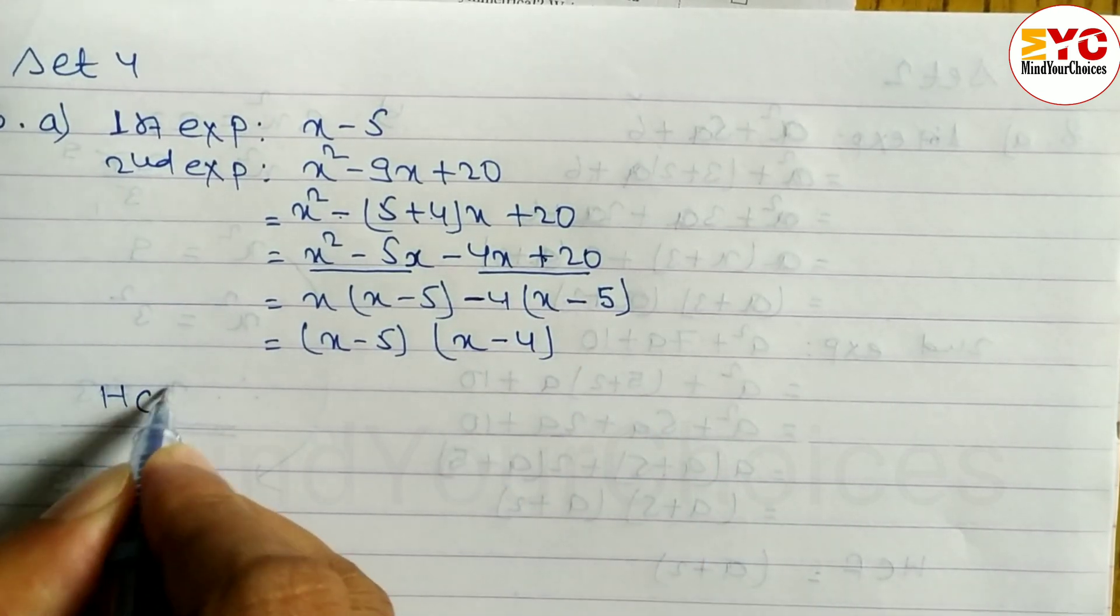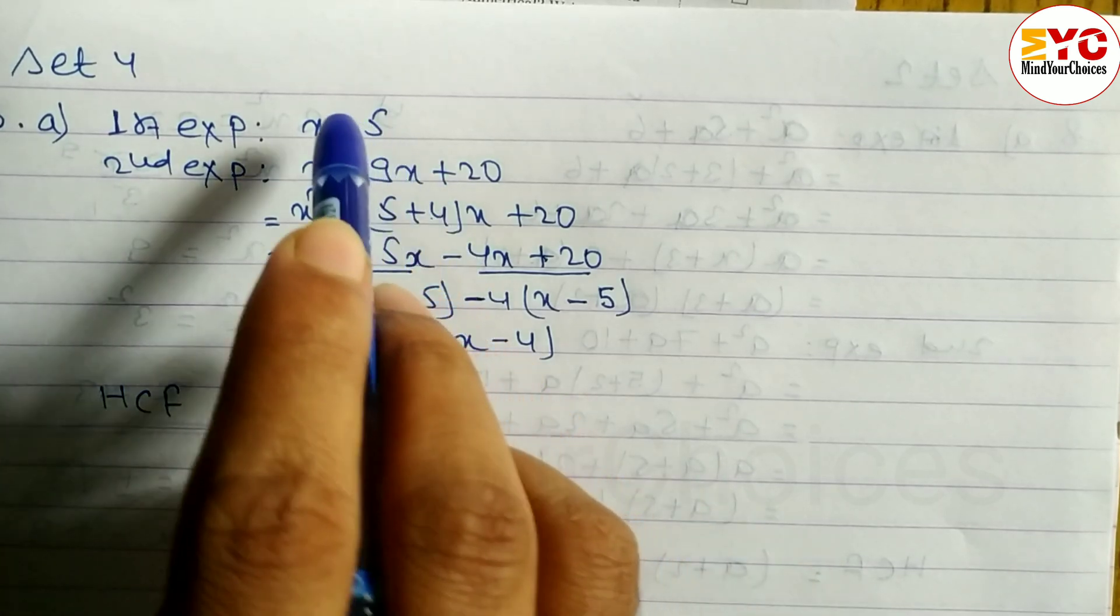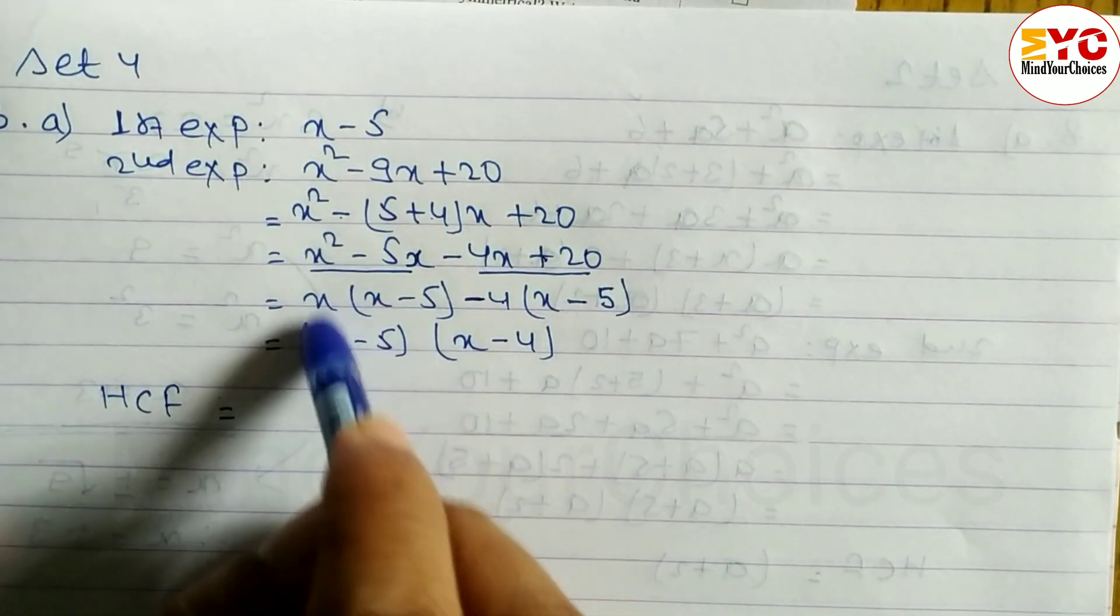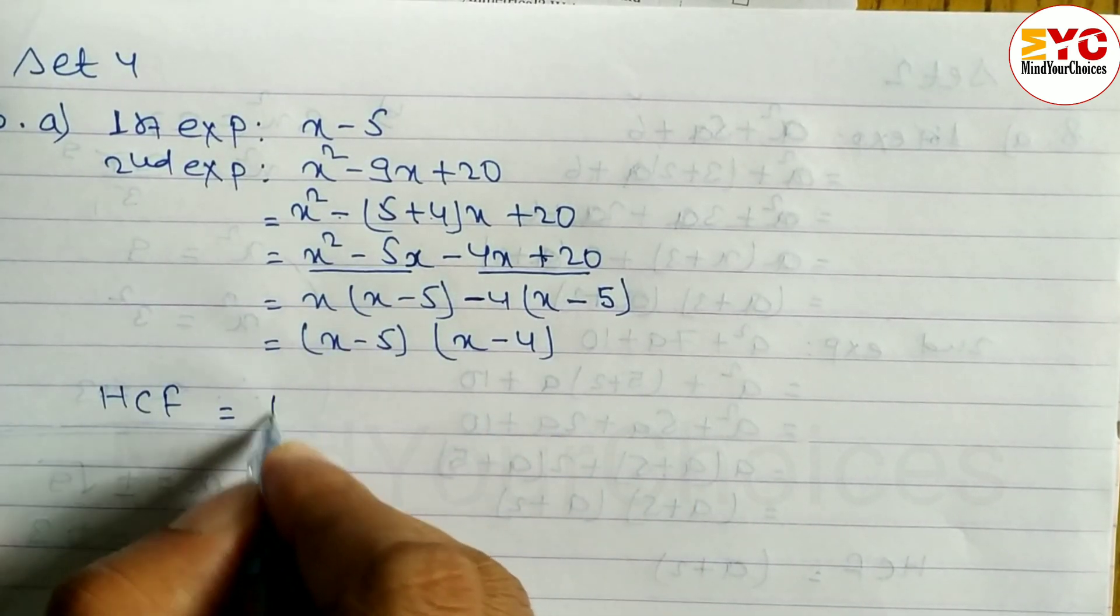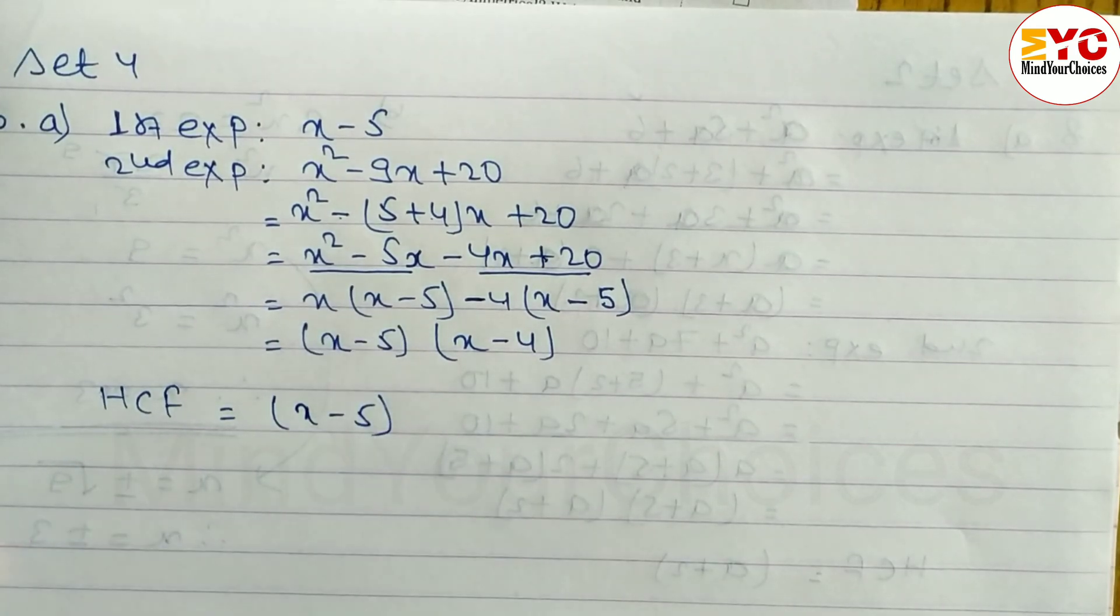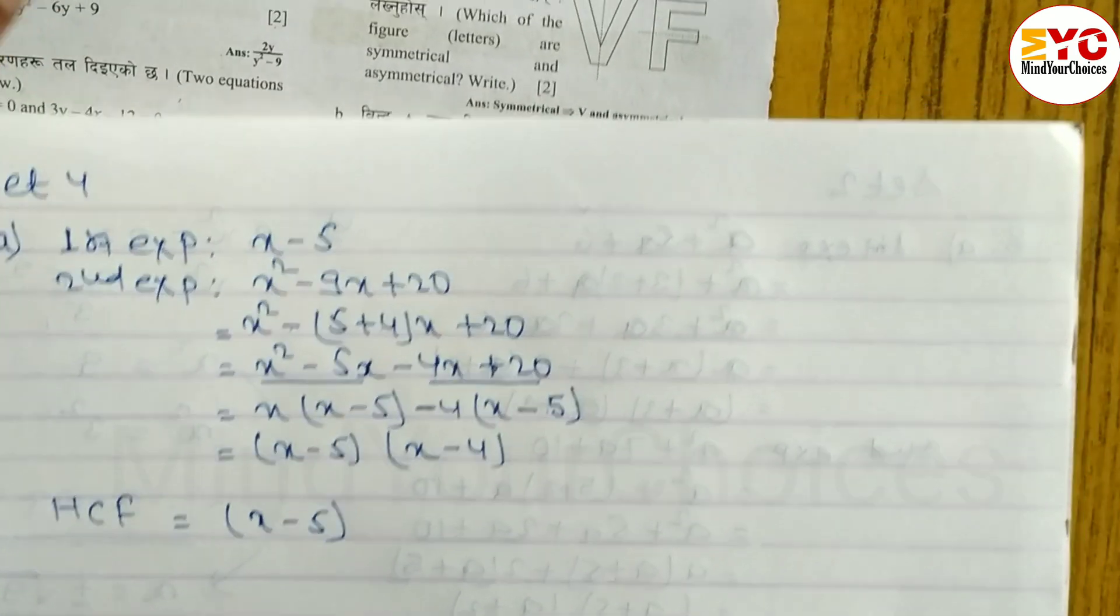Now HCF, we have to find. HCF will be the common factor. Now, first expression has x-5. Second expression also has x-5. So HCF will be x-5. HCF is the common factor. Okay?